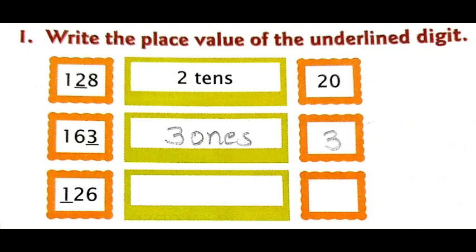What is the next number we have? It is 163. In 163, which digit is underlined? It is 3. 3 is in which place? It is in the ones place. If the digit is in ones place, write that digit as it is. So write 3 ones in the green box and 3 in the orange box.